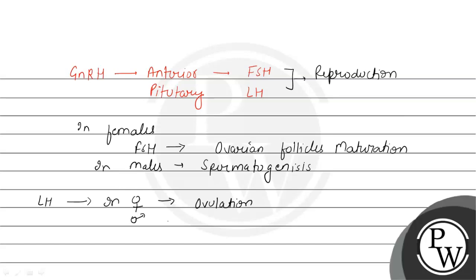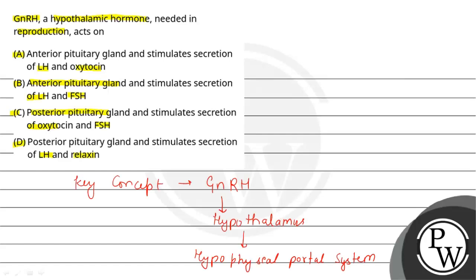In males, LH helps in the production of testosterone, the testosterone hormone. The testosterone hormone can be produced, and secondly, secondary sexual characteristics develop in males.